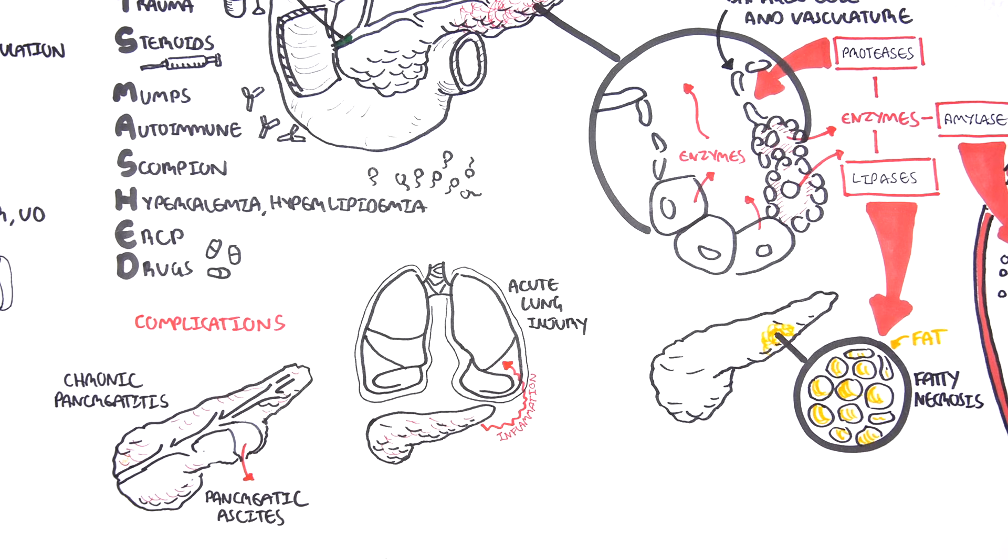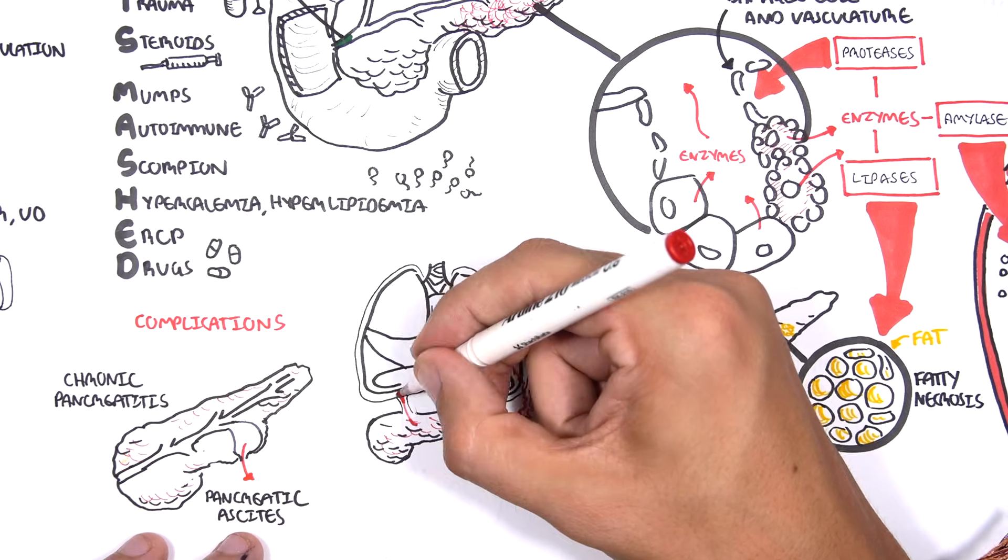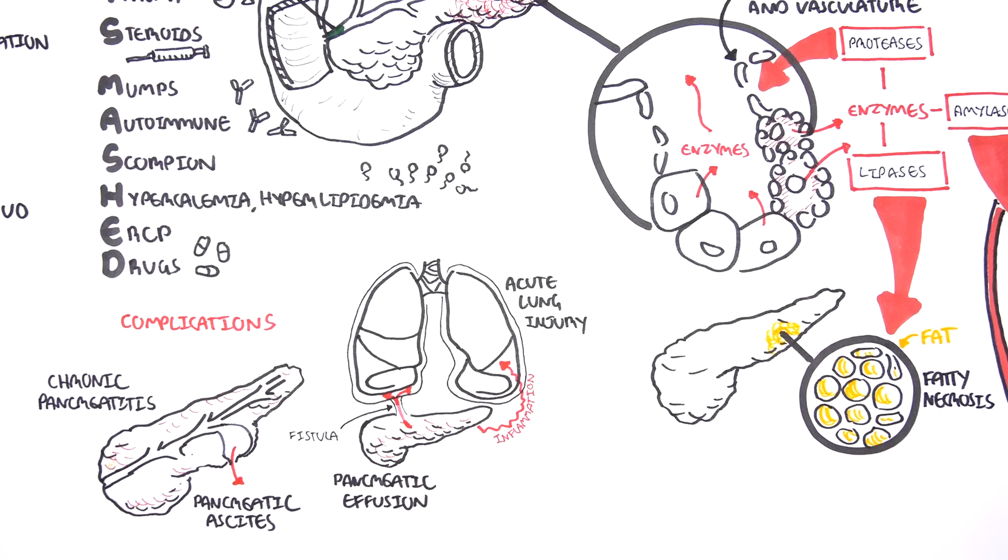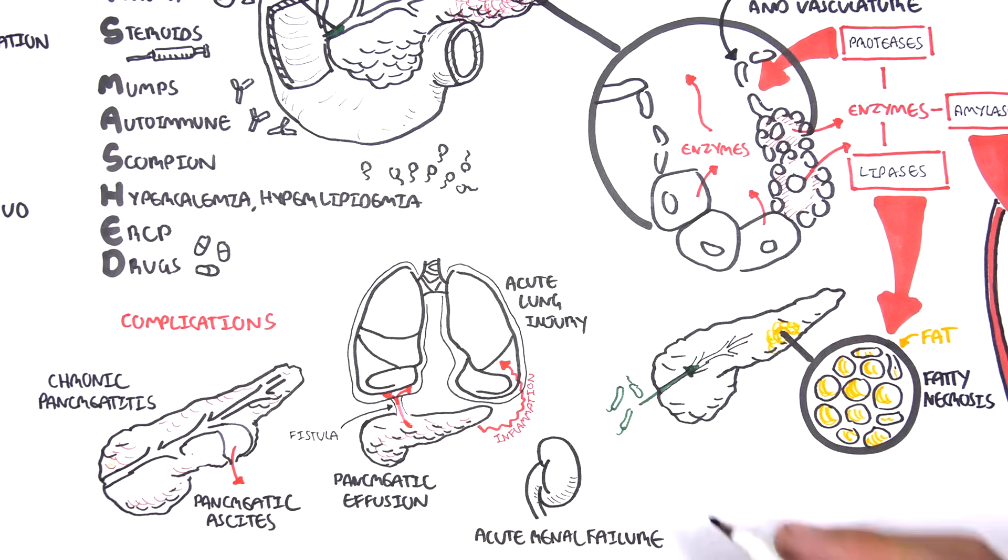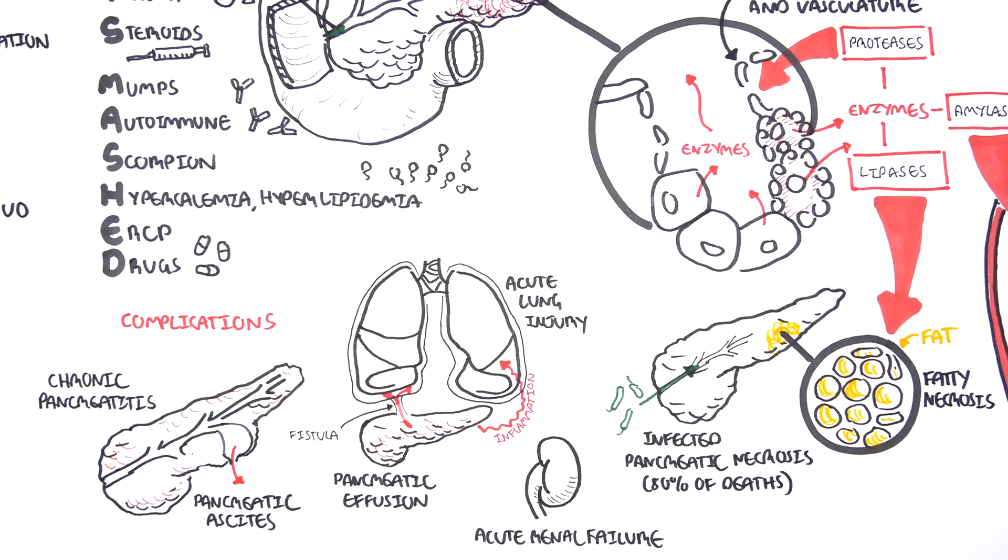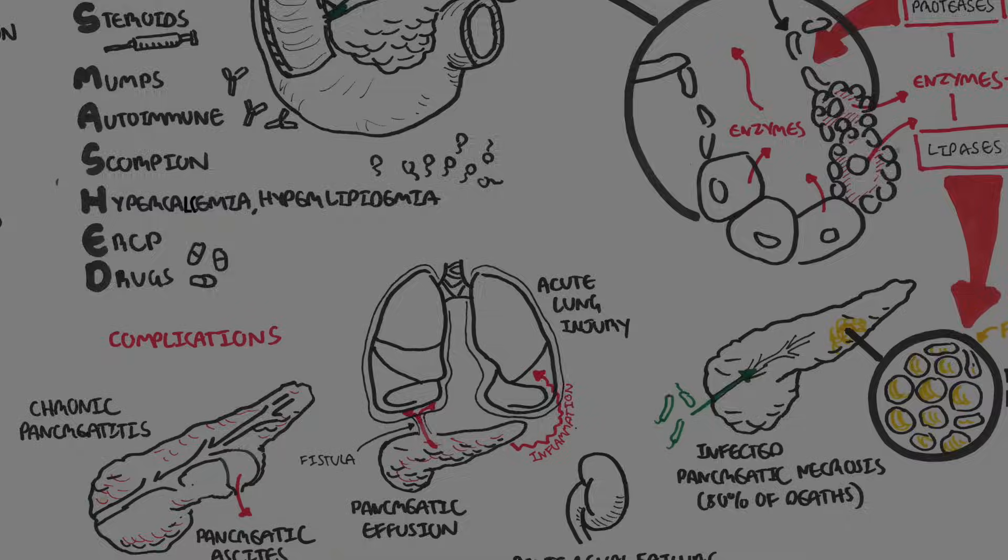Serious pancreatitis can result in fistula forming between the pancreas and the parietal pleura of the lungs. This results in effusion in the pleural cavity. This is called pancreatic effusion. Other complications include acute renal failure and infected pancreatic necrosis, which is related to 80% of deaths. And also there was fatty necrosis, which I mentioned earlier.